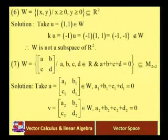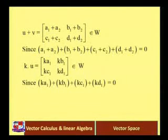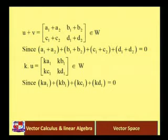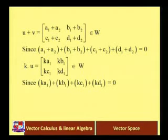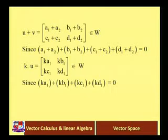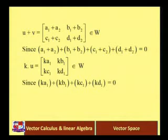U + V = [A1+A2, B1+B2; C1+C2, D1+D2]. This belongs to W because (A1+A2) + (B1+B2) + (C1+C2) + (D1+D2) = (A1+B1+C1+D1) + (A2+B2+C2+D2) = 0 + 0 = 0. So U + V belongs to W. Also, K·U = [KA1, KB1; KC1, KD1], which belongs to W because KA1 + KB1 + KC1 + KD1 = K(A1+B1+C1+D1) = K·0 = 0.